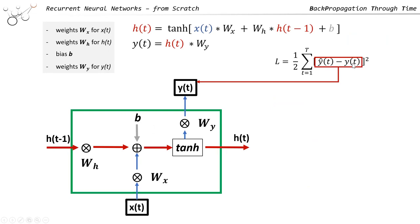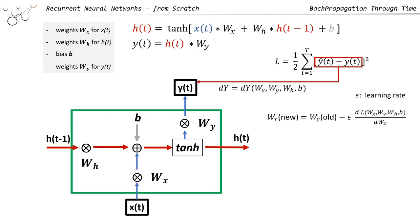The difference between prediction and actual values is our loss function, and we want to minimize the loss function. The loss function is a function of all the learnables. The optimization works with gradient descent, which is a very basic method. In principle, all optimization tools work more or less with one of those versions of gradient descent.